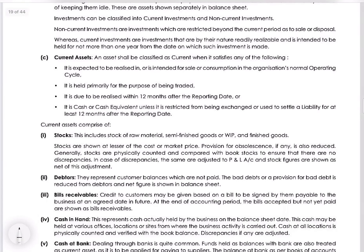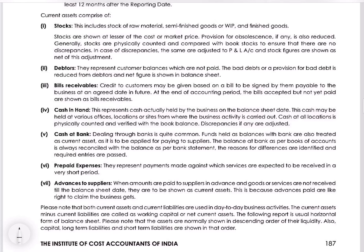Current assets are those assets which the company will be using in the operations of business. These include stocks — also called inventory — closing stock, debtors, bills receivable, cash in hand, cash at bank, prepaid expenses, and advance to suppliers. These are items arising during the operation of the business that the company owns. They are called current assets because they keep on changing within the period of 12 months — one accounting period.